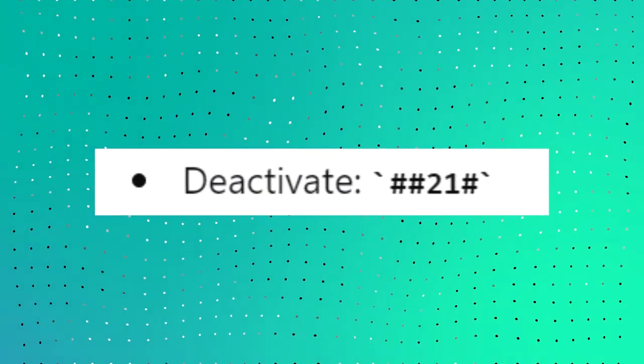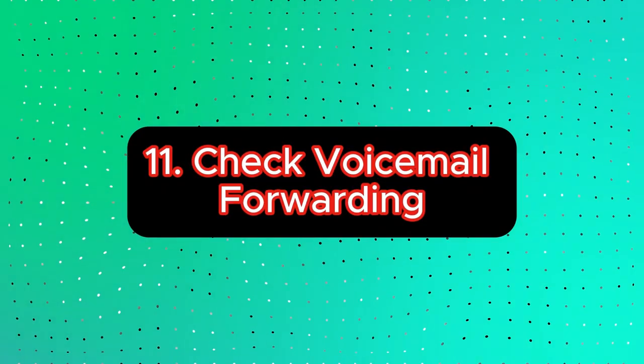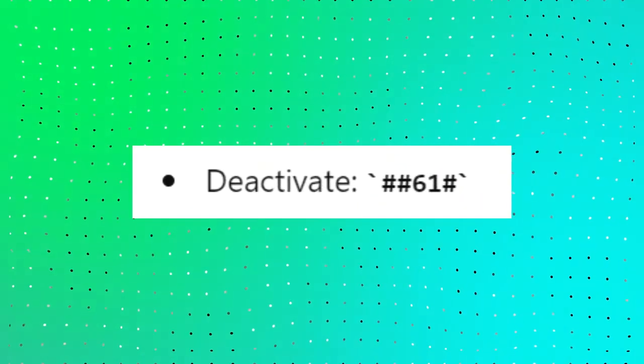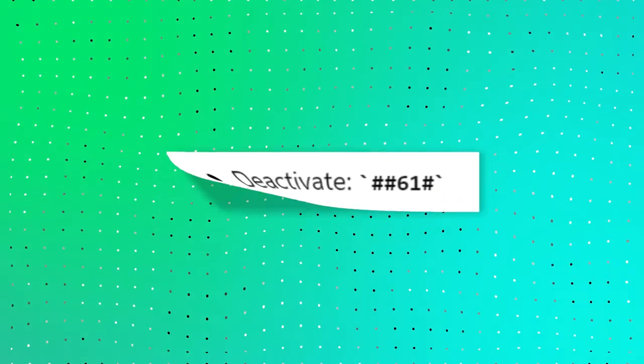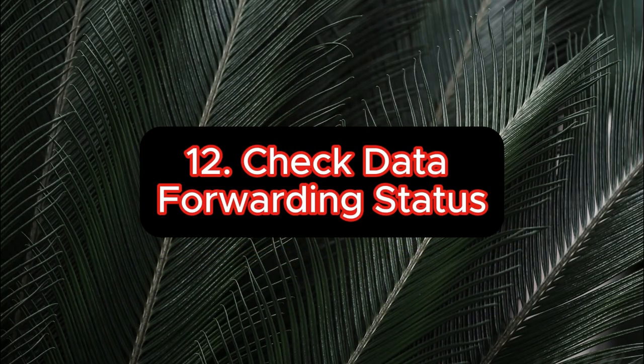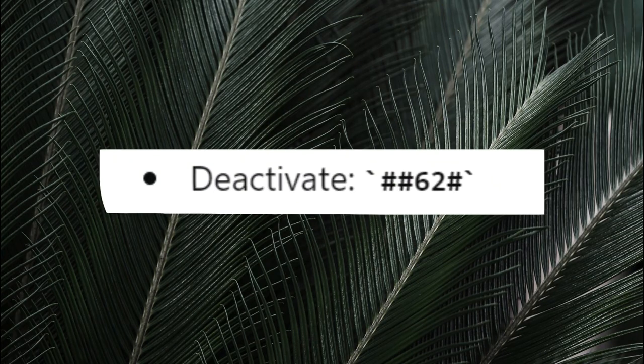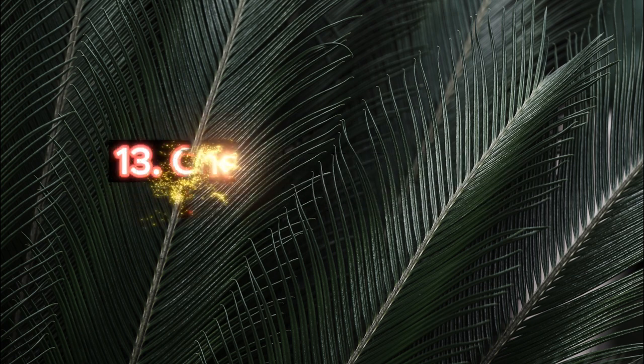To check if your messages are being forwarded, press *#21# and to deactivate it press ##21#. To check if voicemail forwarding is enabled, press *#61# and to deactivate it press ##61#. To check if your data is being forwarded, press *#62# and to deactivate it press ##62#.